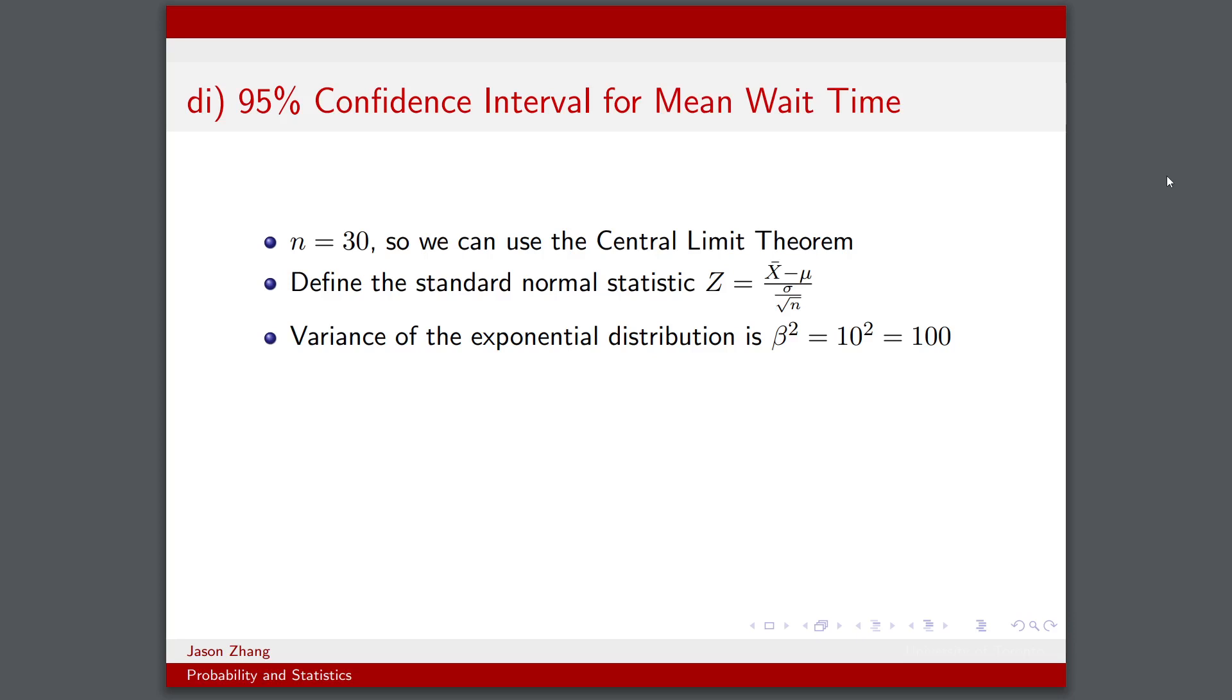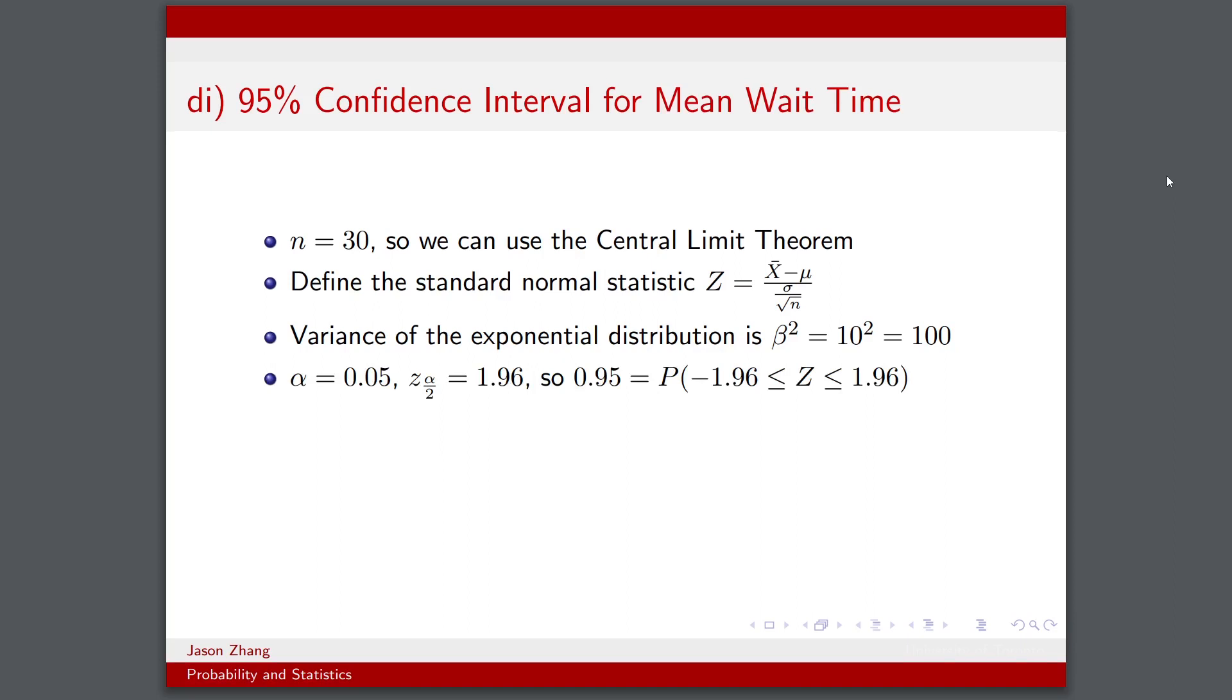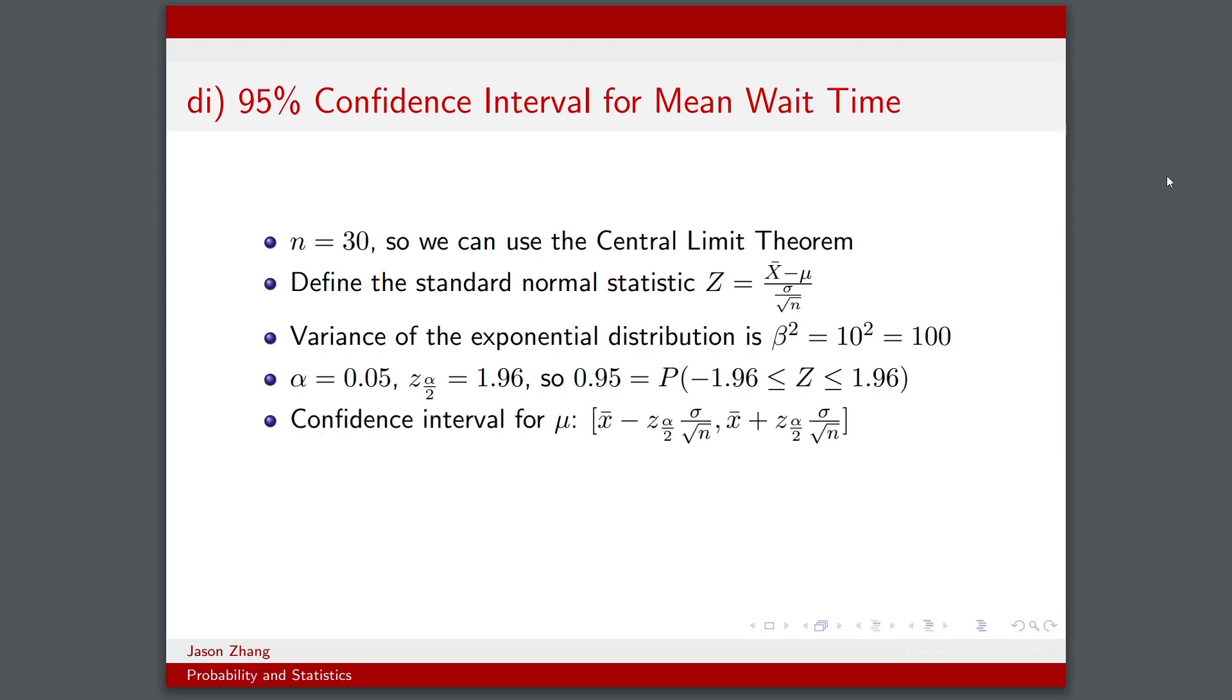And then the variance would simply be β² = 100. We know α = 0.05 because we want a 95% confidence interval. And z_{α/2} would be 1.96. This is just using our standard z tables. So we know that the probability of our standard normal statistic Z being between -1.96 and 1.96 should be equal to 0.95.